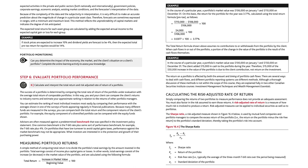The total return formula assumes no contributions to or withdrawals from the portfolio by the client. When cash flows in or out of the portfolio, a portion of the change in the value of the portfolio is the result of the cash flows themselves. For example, a portfolio's market value was $100,000 on January 1st and $150,000 on December 31st, and the client added $15,000 in cash during the year. Therefore, $15,000 of the $50,000 increase is due to the client contribution, not return on the investment. The return on a portfolio is affected by both the amount and timing of portfolio cash flows.